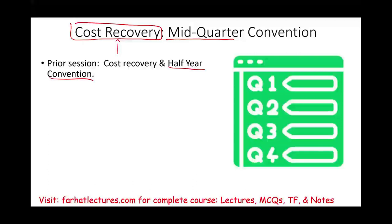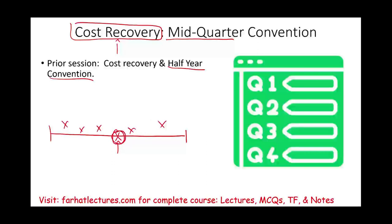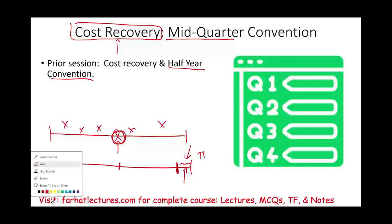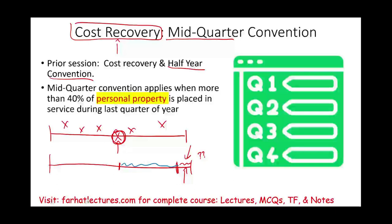The half-year convention assumes that you place your property midway throughout the year regardless of when you purchase the asset. Here's what a business person might do: purchase assets during the last part of the year, sometime in December, and buy as many assets as possible. Why? You'd own the asset for one month but get depreciation for six months. To curb abuses such as these, the government introduces the mid-quarter convention.